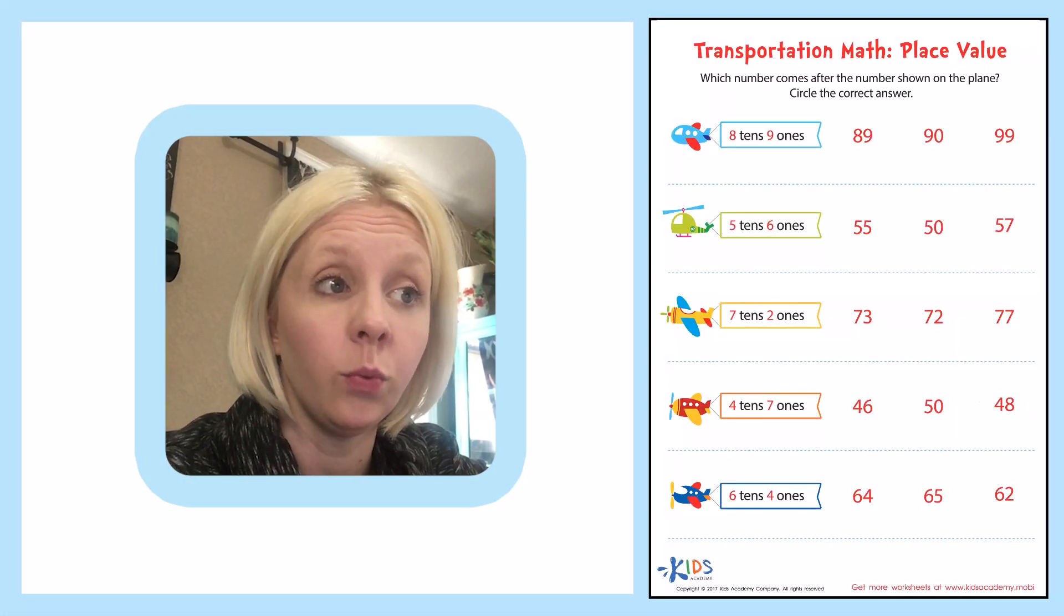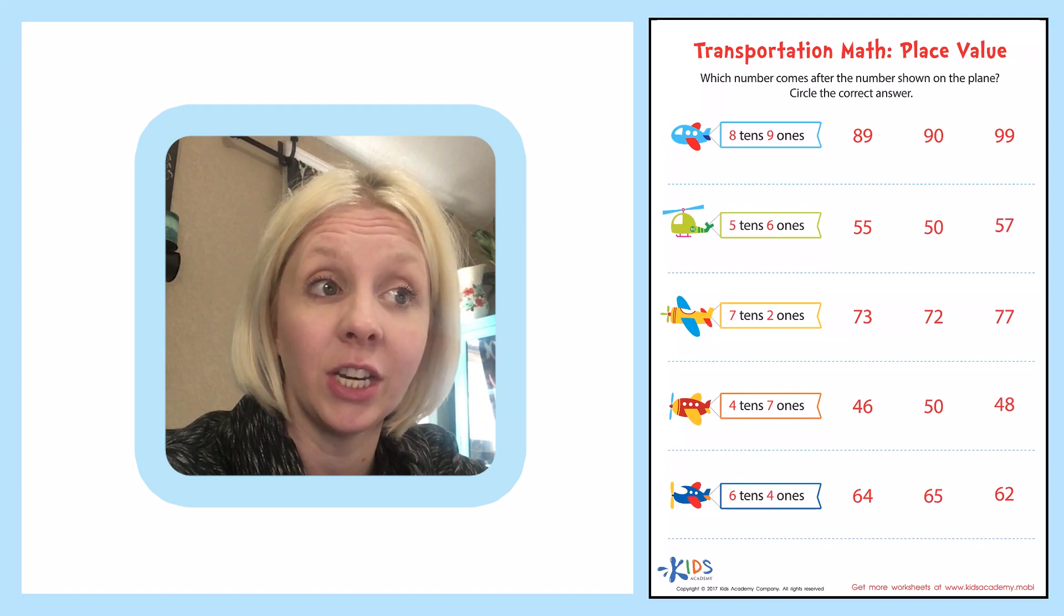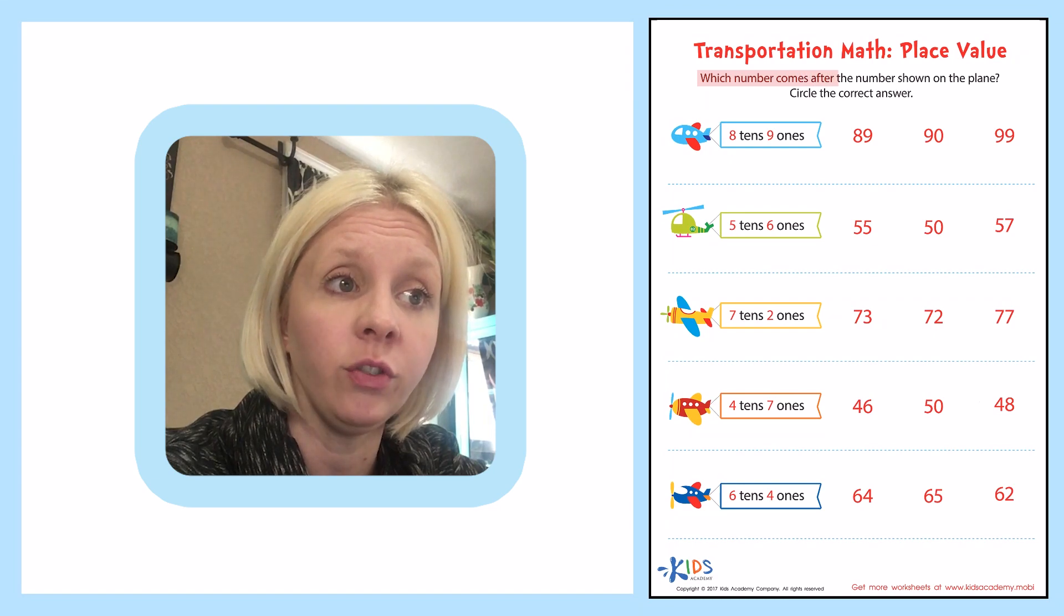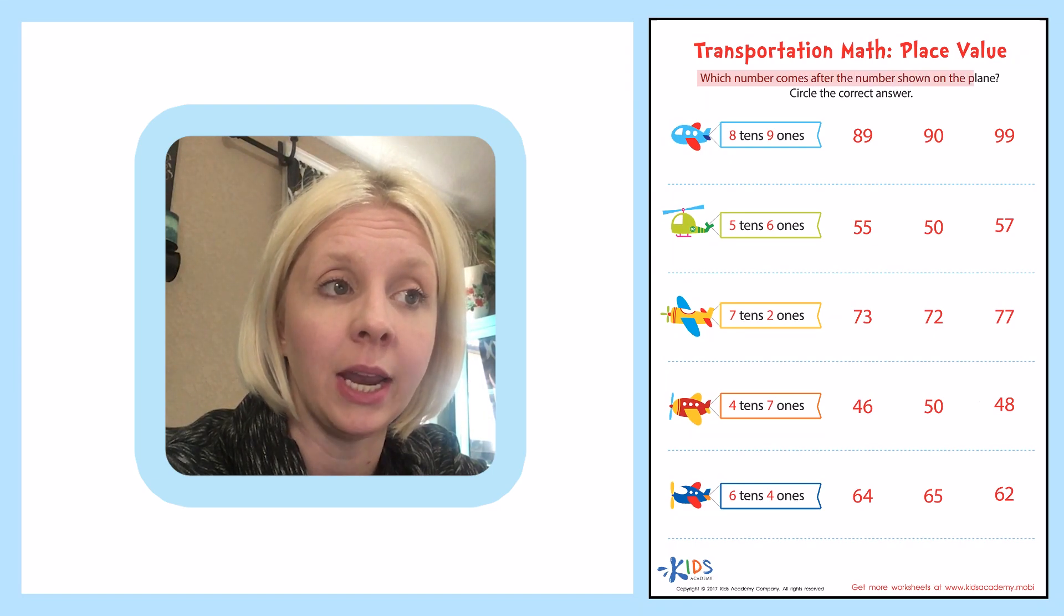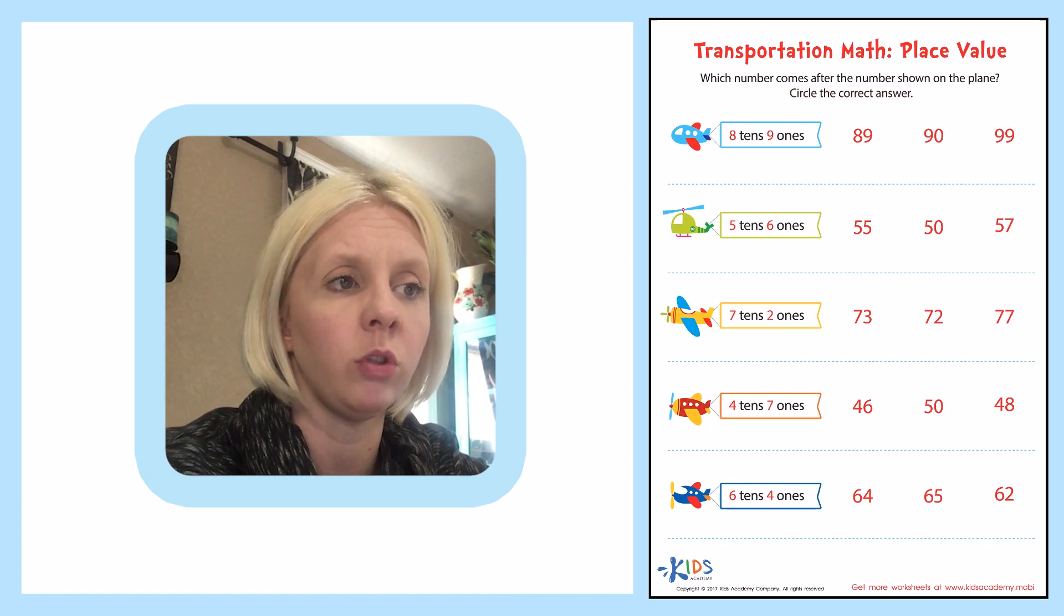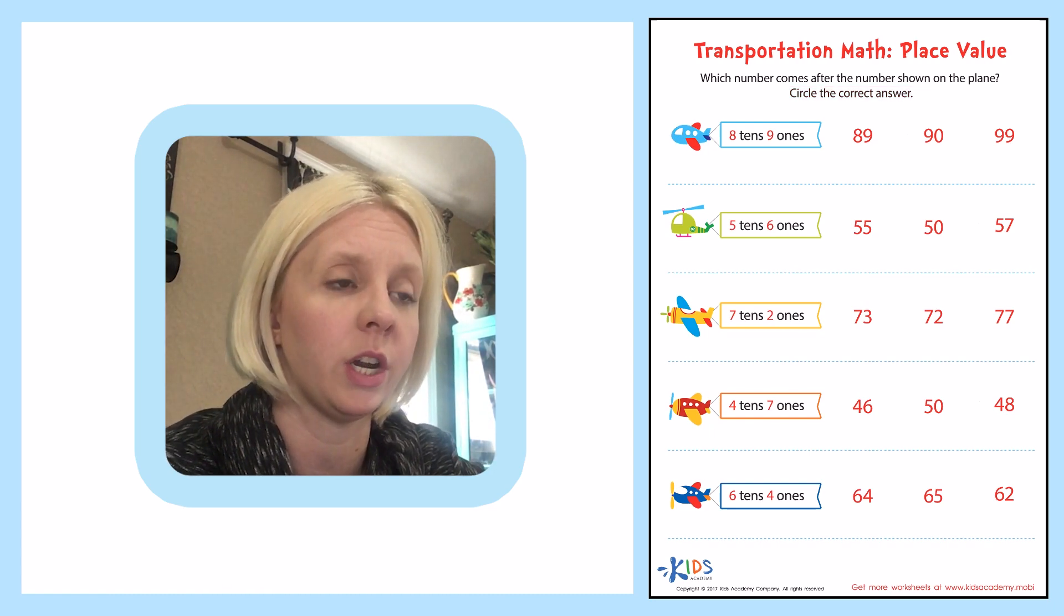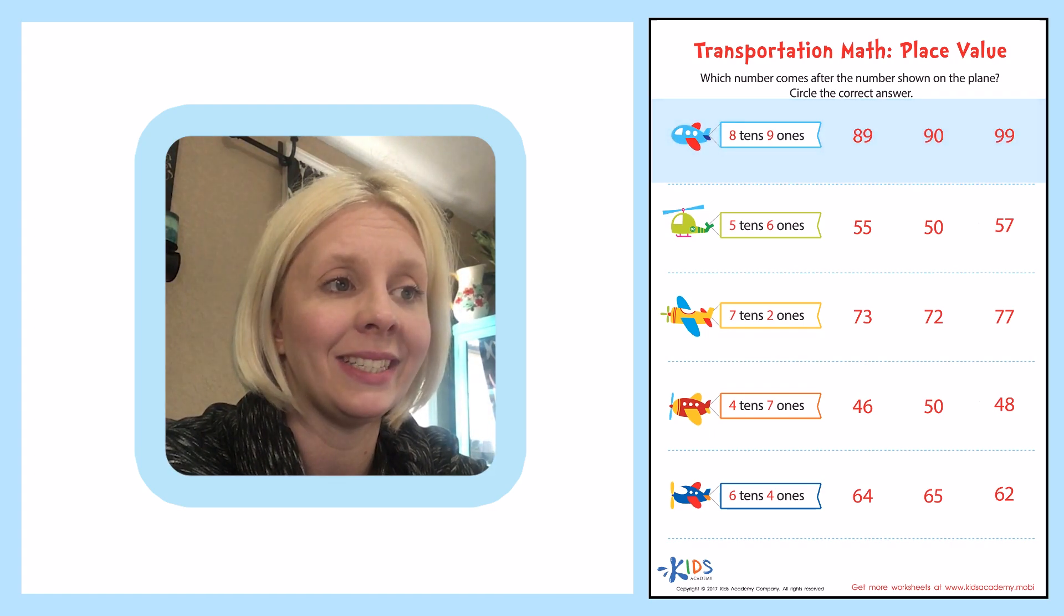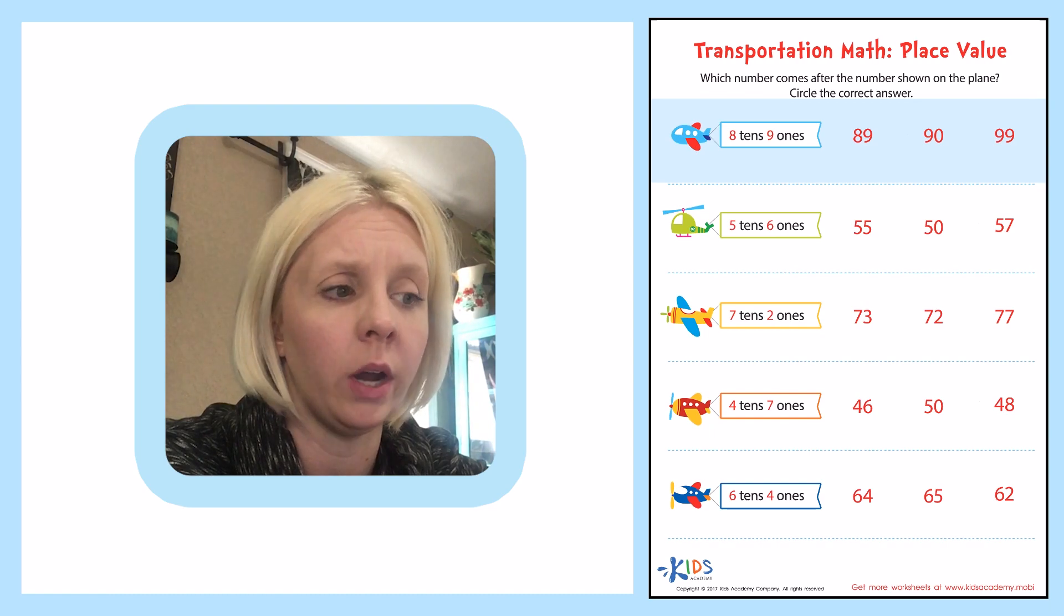Alright, so we have the worksheet named Transportation Math Place Value. Which number comes after the number shown on the plane? Circle the correct answer. So what we're going to do is we're looking at these different numbers here. Our first number is 8 tens and 9 ones.